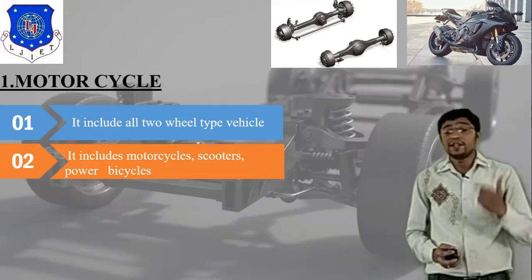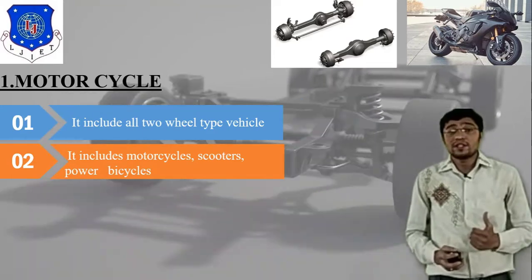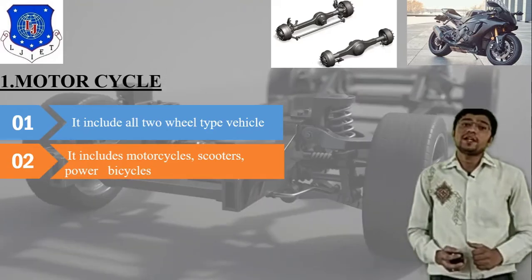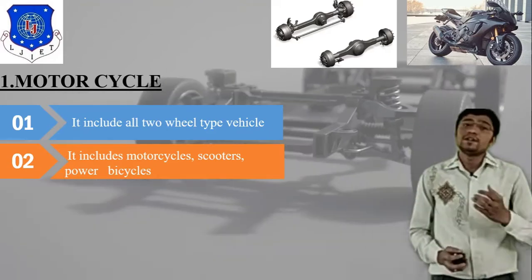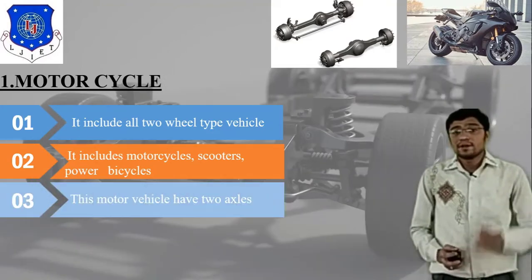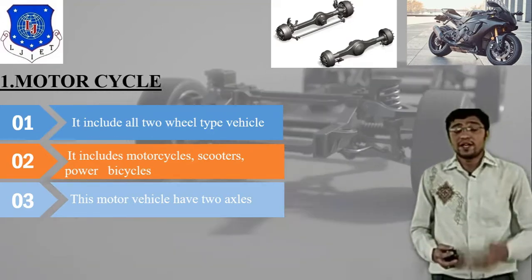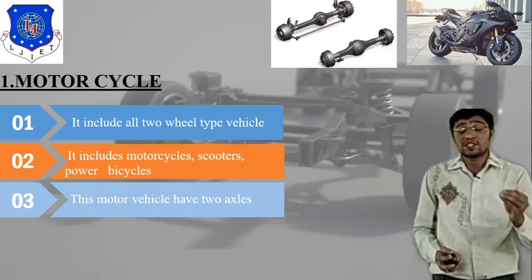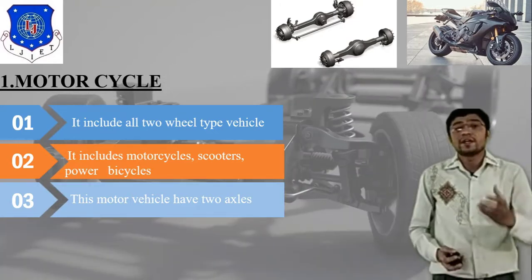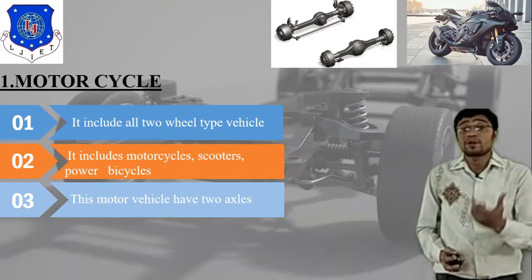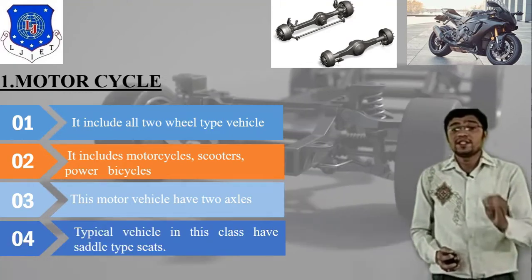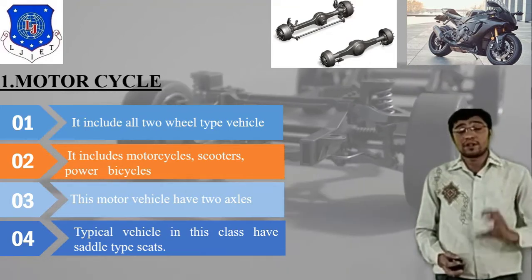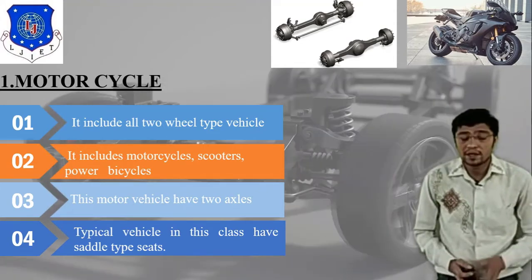Motorcycle includes all two-wheel type vehicles — bike, Activa, and similar. It includes motorcycle, scooter, and power bicycle. This motor vehicle has only two axles, which carry and support the vehicle load. The typical vehicle in this class is saddle-type. This covers the motorcycle concept, axle, body, and objectives.